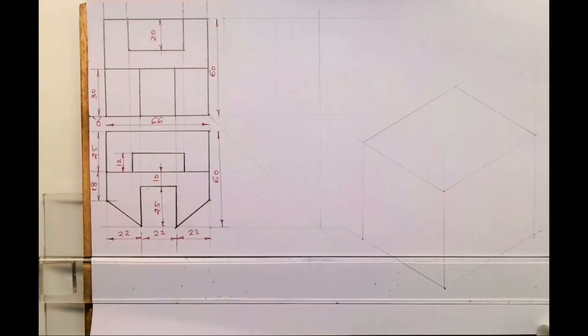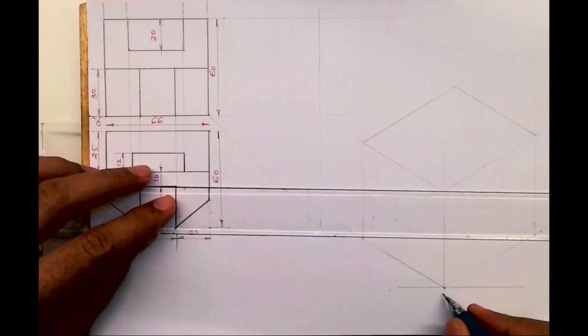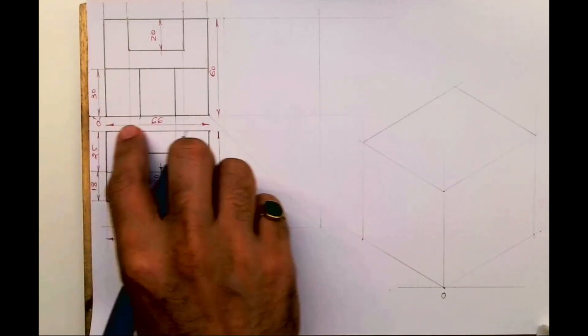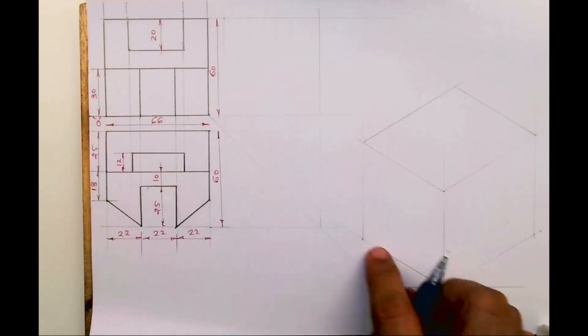Welcome to technical drawing. Today we'll see this sum in isometric. First, we need to draw a box at 30 degree angle. We'll write the origin length which is on the right hand side: 66, height is 60, width is 60.